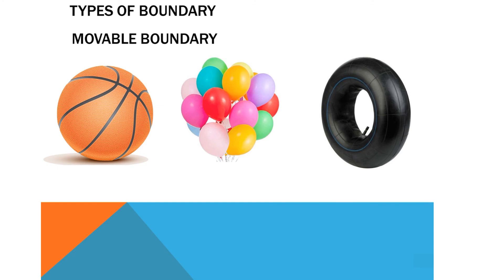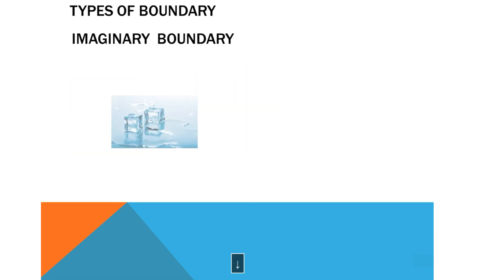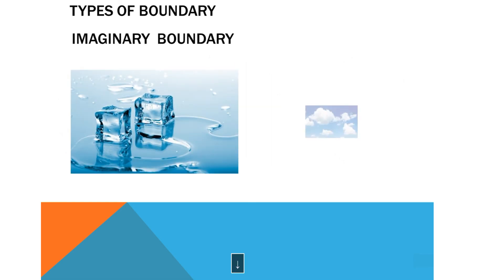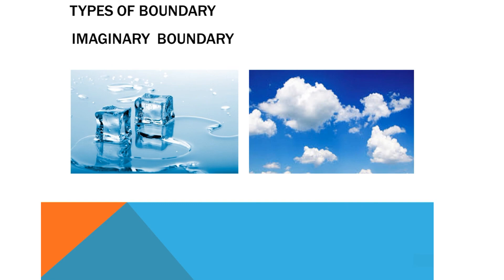The last one is the imaginary boundary. In an imaginary boundary we cannot judge the dimension of the boundary — we just imagine it. Examples include the melting of ice, the atmosphere, or clouds. I hope this content is helpful to you. Thank you for watching this video.